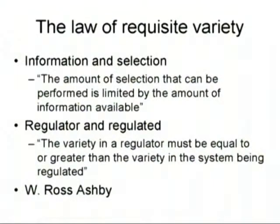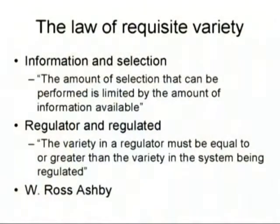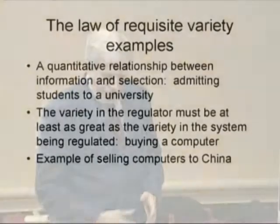Let's go on to the law of requisite variety, often called Ashby's law. It's absolutely fundamental — so fundamental many people say it's trivial. However, it's a starting point, an axiom, a wonderful beginning for many logical arguments. There are two ways of stating it: first, the amount of selection that can be performed is limited by the amount of information available — it states the relationship between information and selection. Second, the variety in a regulator must be equal to or greater than the variety in the system being regulated.